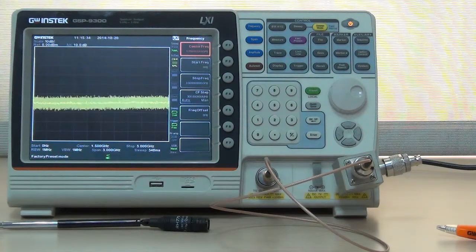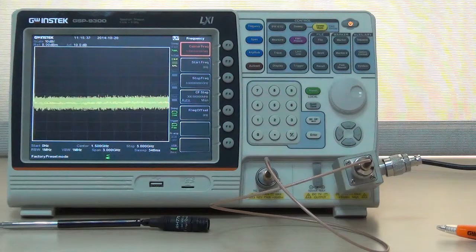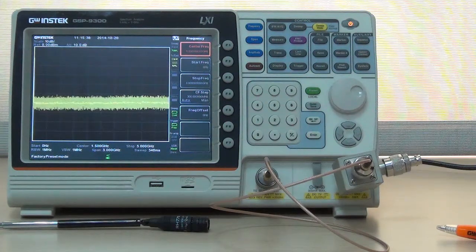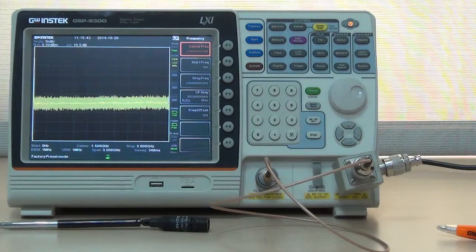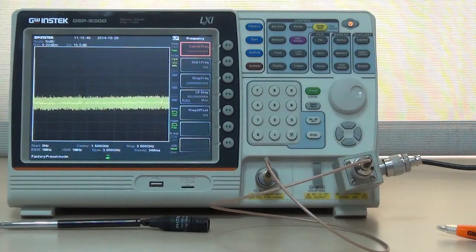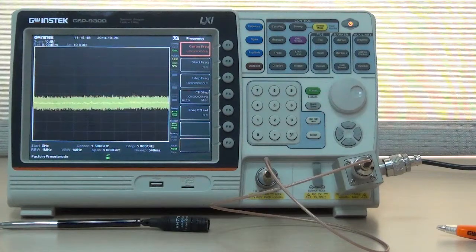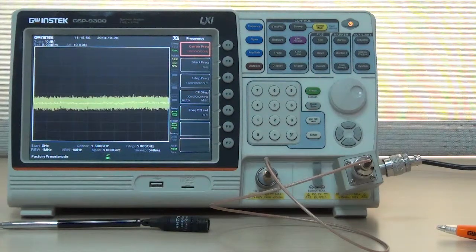The Scalar Network Analysis Function must collocate with optional tracking generator. Before using Scalar Network Analysis Function, user must conduct normalization to exclude the inference of return loss breach, SMA RF cable, and adapter.